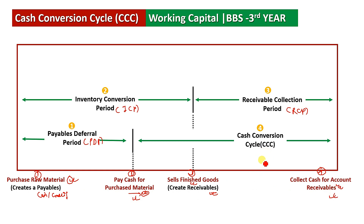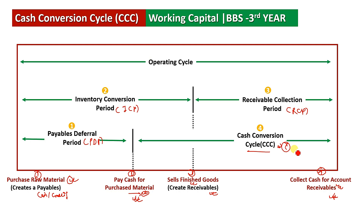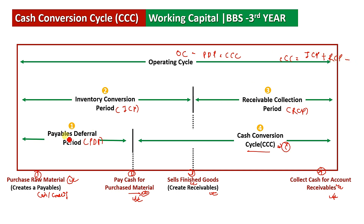This formula is one of the important things. The Cash Conversion Cycle starts from the operating cycle. The Cash Conversion Cycle equals the operating cycle minus the Payable Deferral Period. The operating cycle equals Inventory Conversion Period plus Receivable Collection Period.